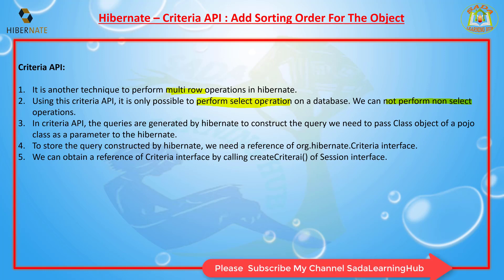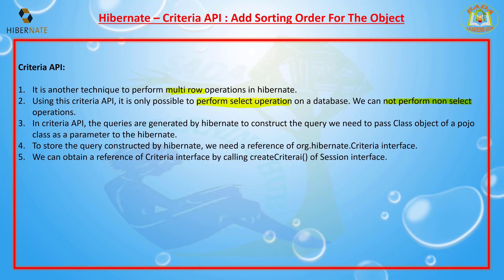Hibernate constructs the query — we are not writing any queries ourselves, just creating classes and interface references. To store the query constructed by Hibernate, we need a reference of org.hibernate.Criteria. We can obtain the reference of the Criteria interface by calling the createCriteria() method, which gives you the Criteria reference object.